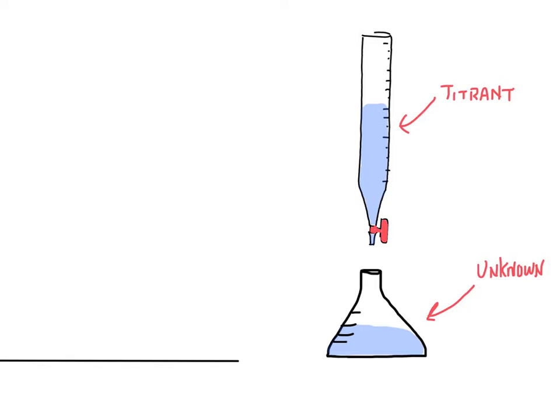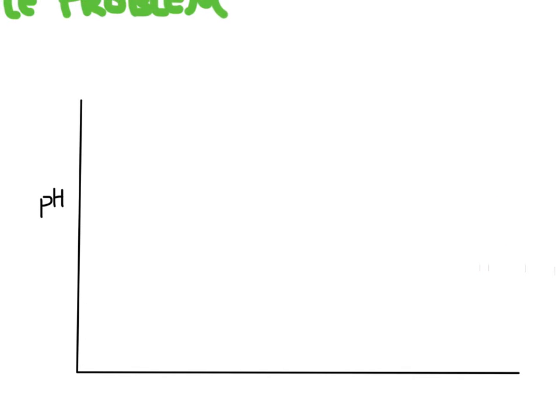What we're trying to do is figure out when is this completely neutralized. So what we do is we use a couple different methods. The first method is we can graph the pH of the solution versus the volume of base that's added. Now the solution originally would be acidic, and so it would have a pretty low pH, and as we start adding base, the pH would gradually increase.